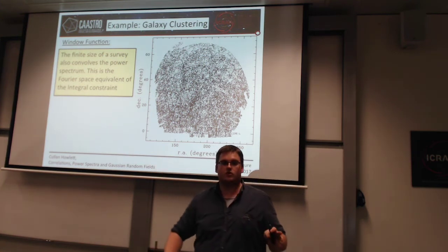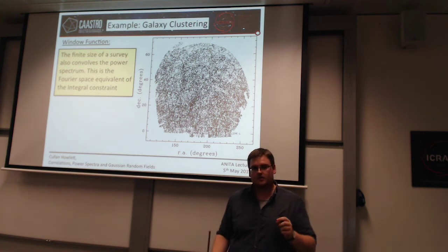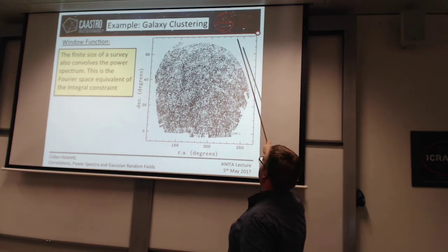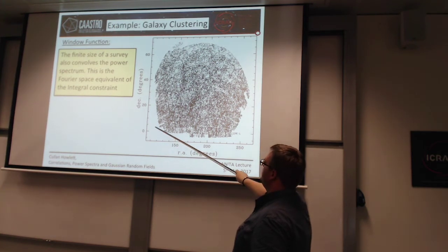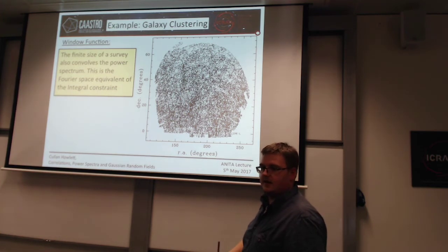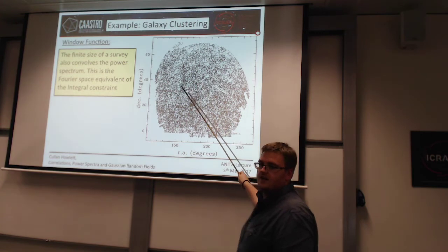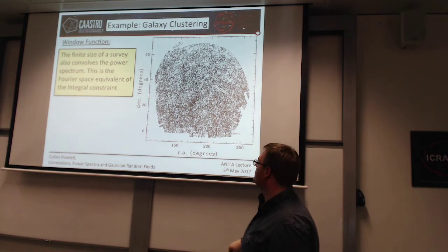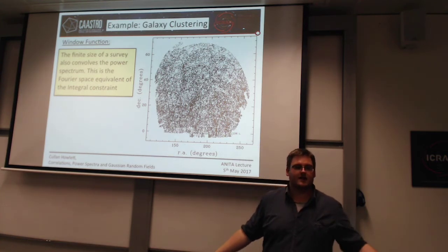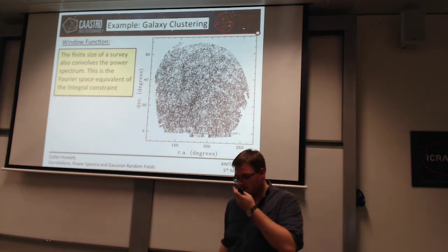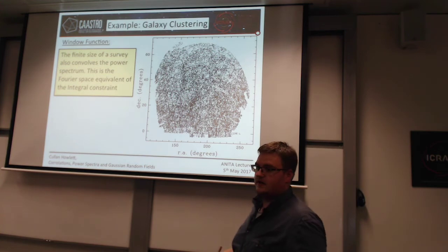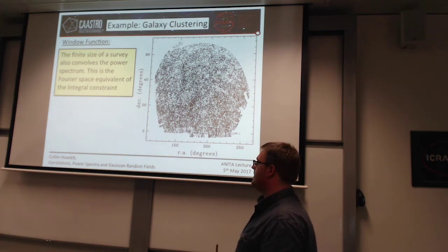However, something that is unique to the power spectrum of your density field is the window function. As I talked about earlier, you have this integral constraint in your correlation function — you can't measure correlations larger than the size of your survey mask. The density you're calculating is just the average of the points inside the survey mask, which might not be the true density of the universe.